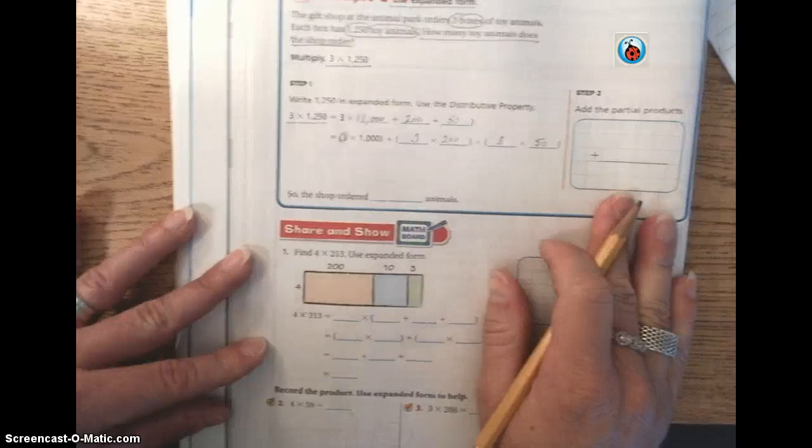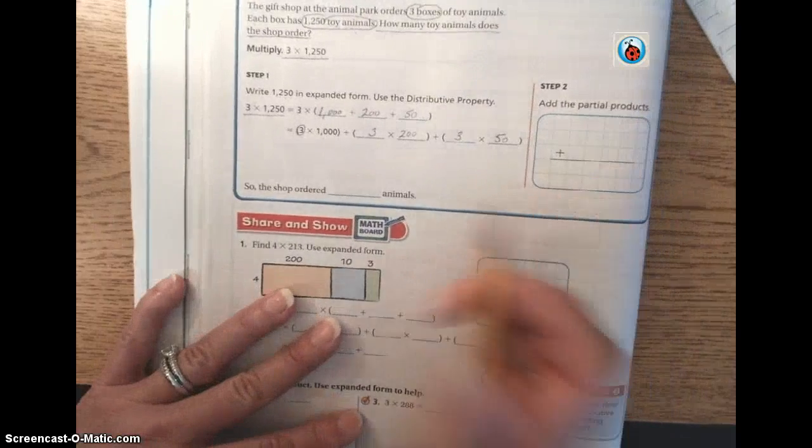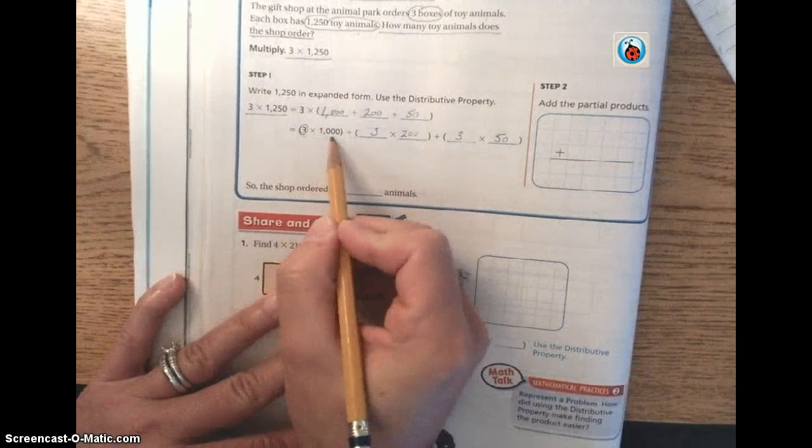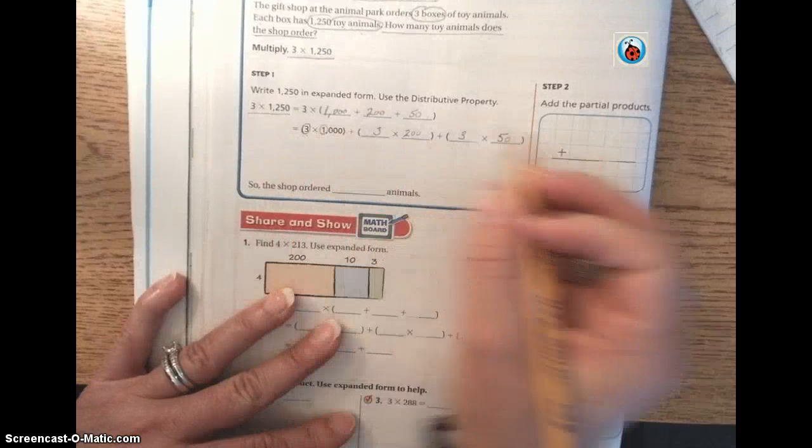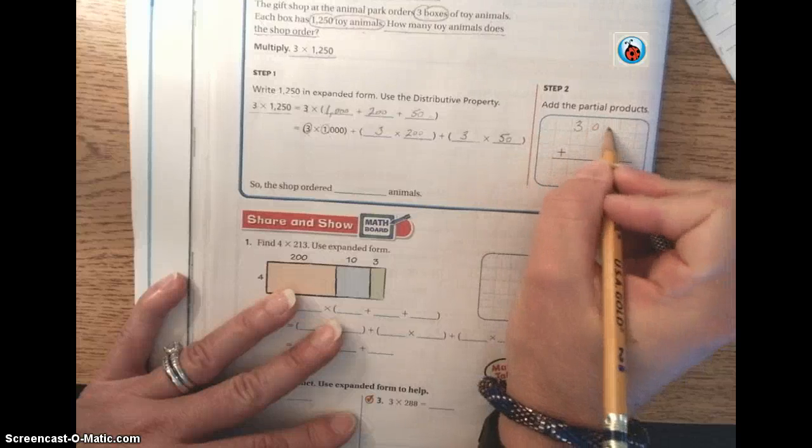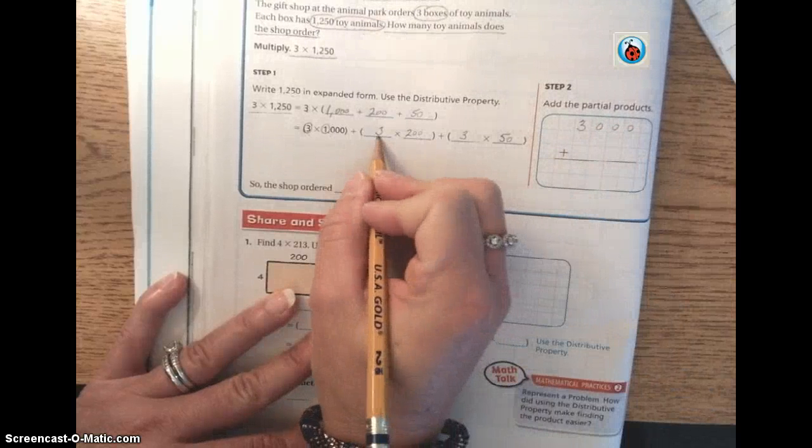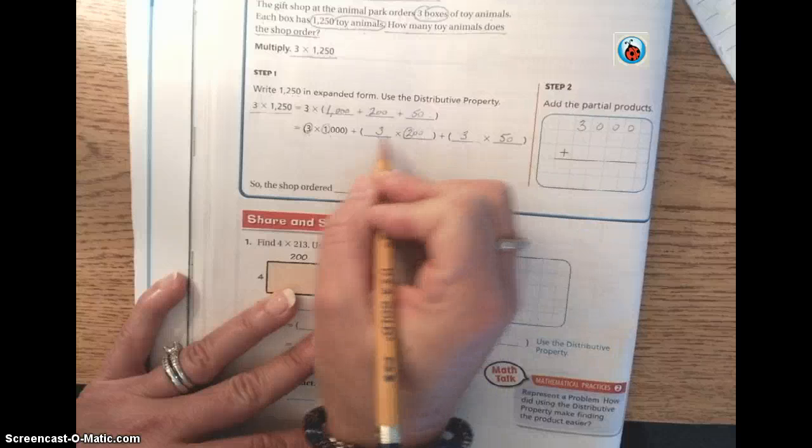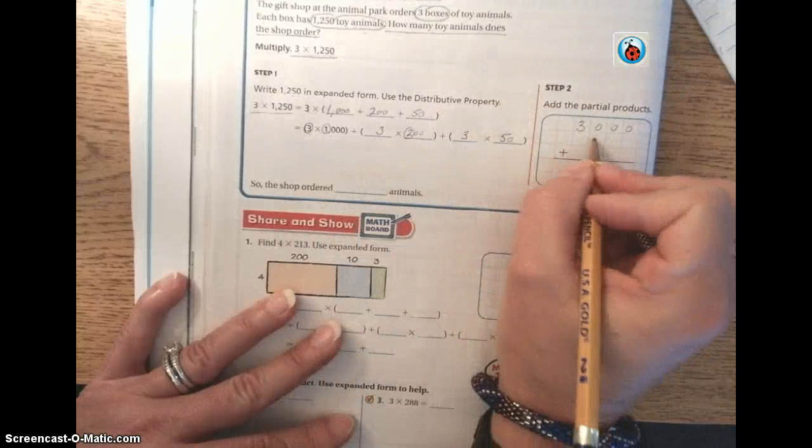So the next step is to add up the partial products. So mental math tells us that three times 1,000 is 3,000. So we're going to have 3,000 plus three times 200. Mental math tells us that that's 600.